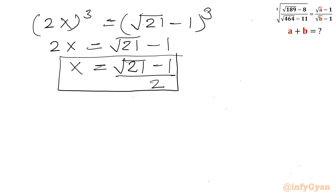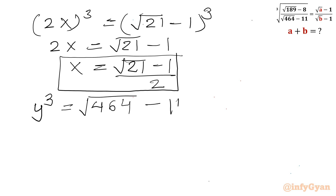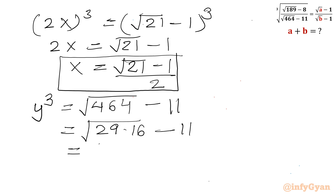Now the turn of the denominator. So y³ equals square root 464 minus 11. I can factor 464 as 29 times 16, so square root 464 equals 4·root 29. Therefore y³ equals 4·root 29 minus 11.